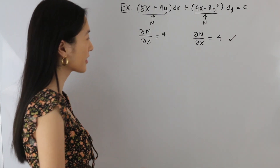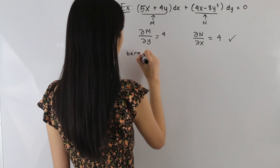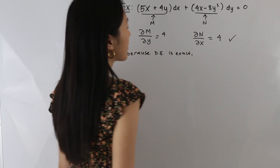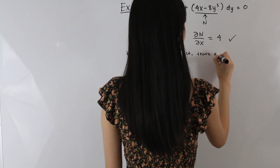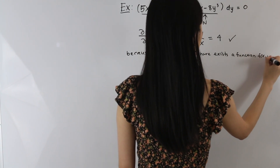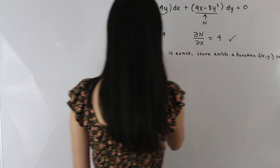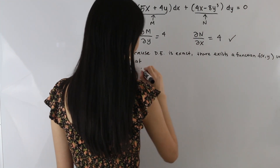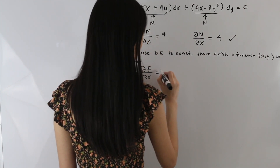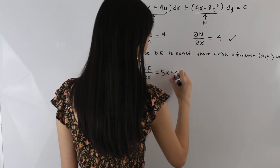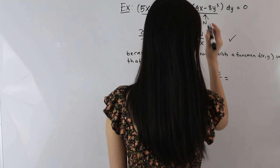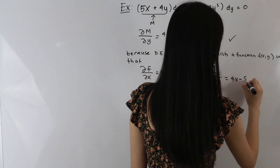Because our differential equation is exact, there exists a function f(x, y) such that the partial derivative of f with respect to x is equal to M, which is 5x + 4y, and the partial derivative of f with respect to y is equal to N, which is 4x − 8y³.